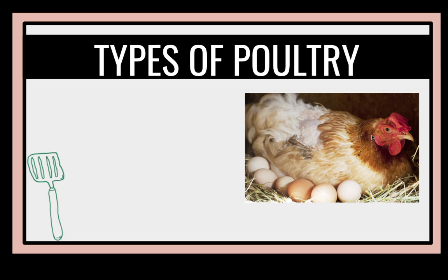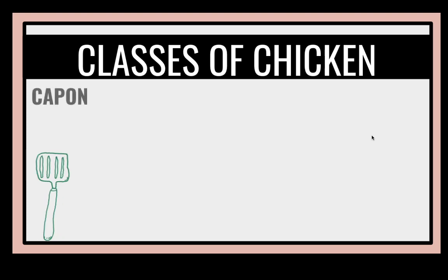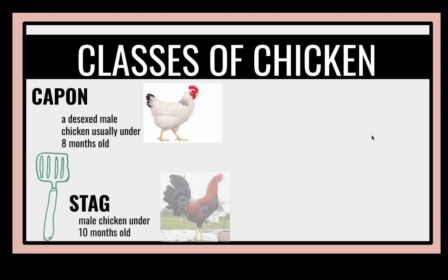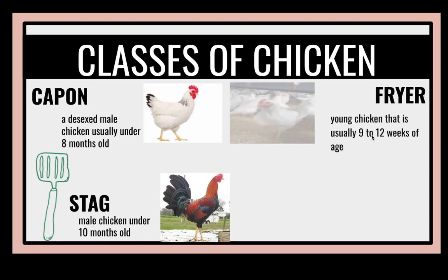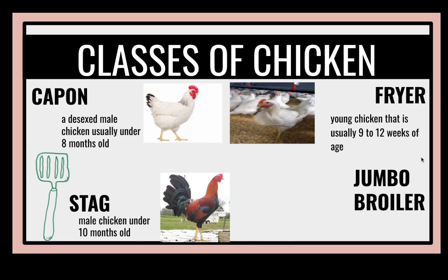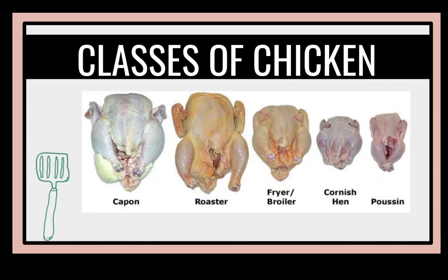Under the types of poultry, No. 1, we have chicken, which is the most popular species used for both meat and egg production. Chicken has its classifications: the capon, which is a castrated male chicken usually under 8 months old; the stag, a male chicken under 10 months old; a fryer, which is a young chicken usually 9 to 12 weeks of age; and the jumbo broiler, a class of poultry that is on sale especially during the Christmas holiday.